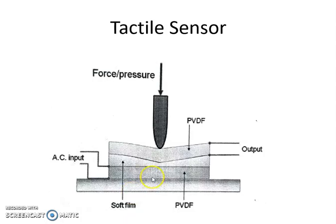In the construction of a tactile sensor, a soft film is sandwiched between two PVDF layers. PVDF means polyvinylidene fluoride. This soft film is made up of a piezoelectric material. We know that piezoelectric material has an inherent property that when AC supply is applied across its surface, it deforms — that is, its dimensions change.